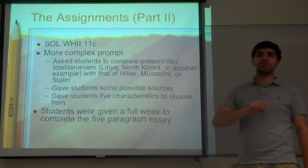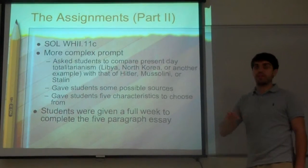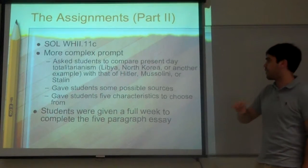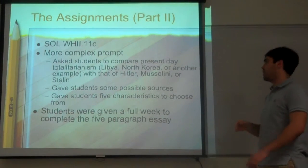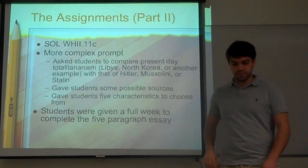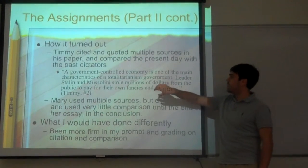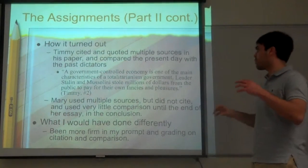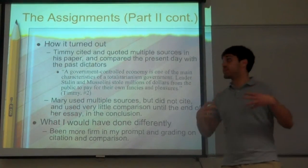The second prompt, World History 2, 11C, deals with the rise of dictators and totalitarianism. I asked students to compare present-day totalitarianism in Libya and North Korea — or another example they could find — with that of Hitler, Mussolini, or Stalin. I gave students five possible sources and a list of five characteristics such as control of the media, a strong central leader, and cult of personality. Students were given a full week to complete it. Timmy's citing and quoting shows him using ideas about Stalin and Mussolini in his writing to back his point about Gaddafi being a totalitarian.